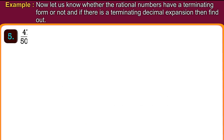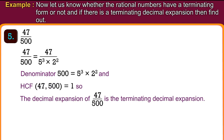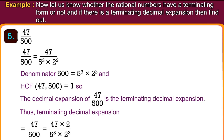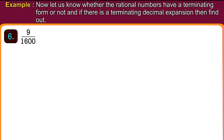Number 5: 47 upon 500. 47 upon 500 equals 47 upon 5 cubed into 2 squared. The denominator 500 equals 5 cubed into 2 squared. The highest common factor of 47 and 500 is 1. So the decimal expansion of 47 upon 500 is the terminating decimal expansion. Thus, 47 upon 500 equals 47 into 2 upon 5 cubed into 2 cubed, equals 94 upon 1,000, equals 0.094.